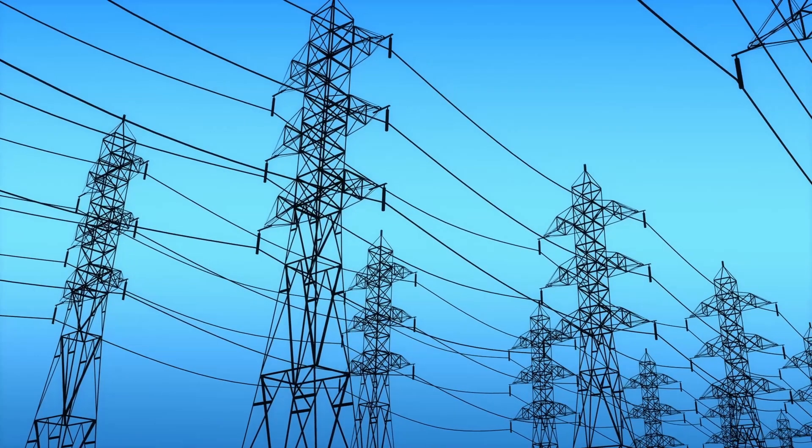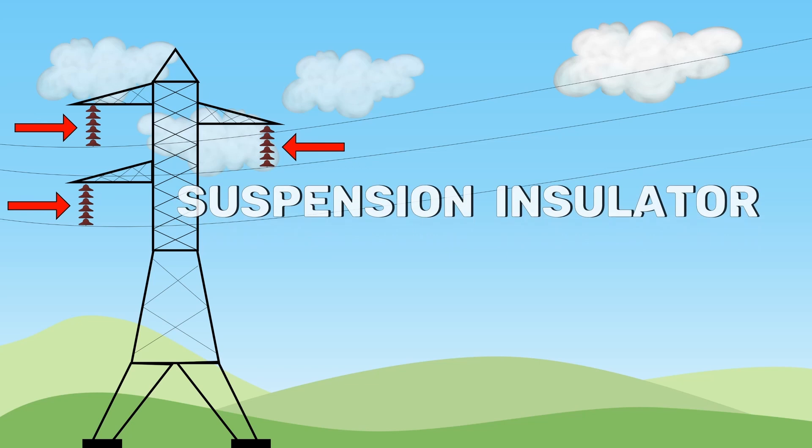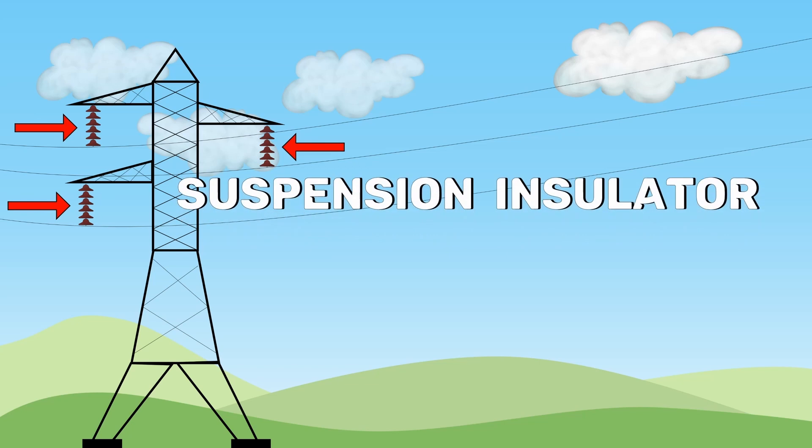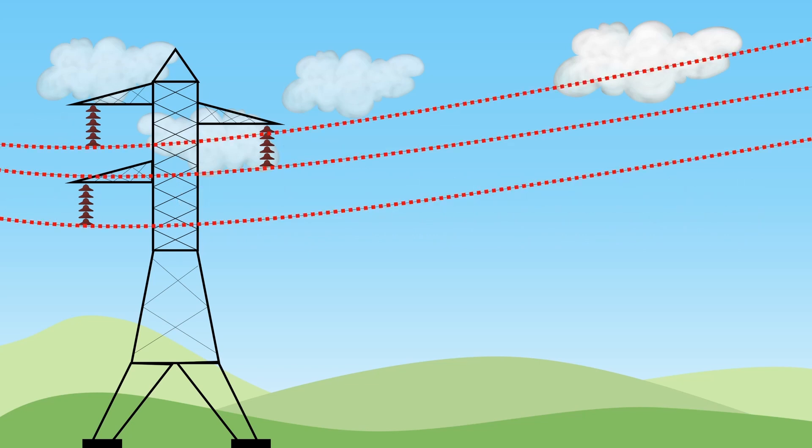For high voltage transmission, a string of suspension insulators is used so that the current from the conductors does not flow to the earth through towers.